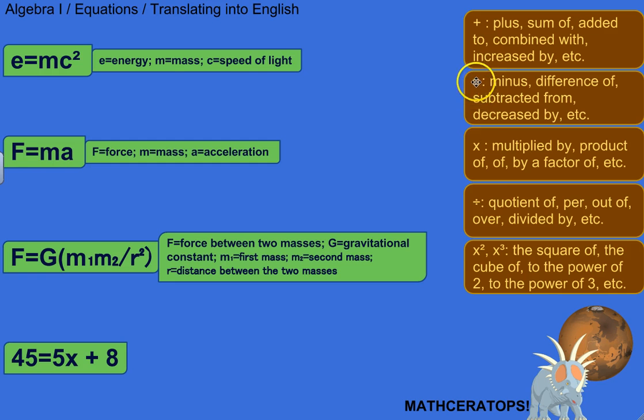If you see a plus sign, a minus sign, if something's being multiplied or divided, or if you see some powers, here's ways you can translate that, at least into English. So, plus - the plus sign could mean plus, or the sum of, or added to, combined with, or increased by. Those are all valid ways of describing this math symbol.